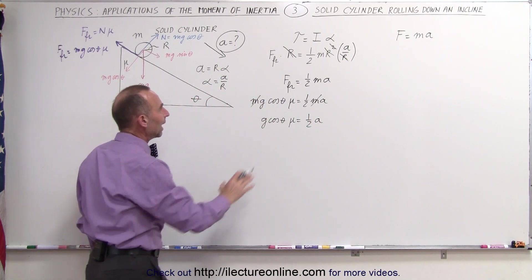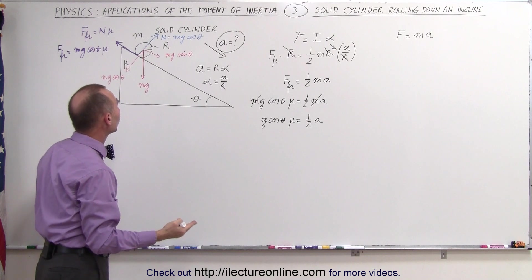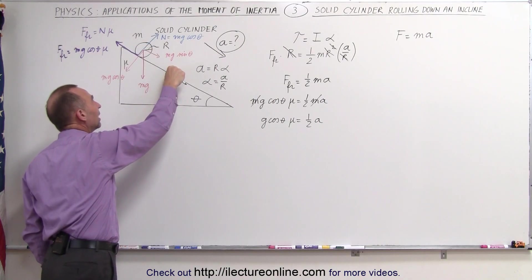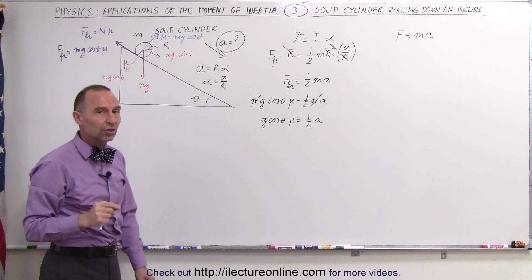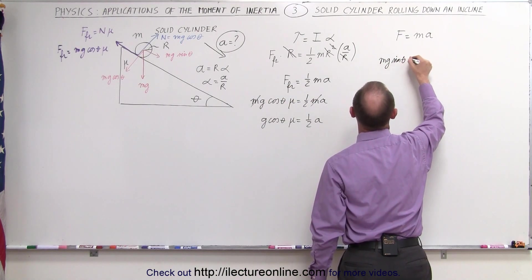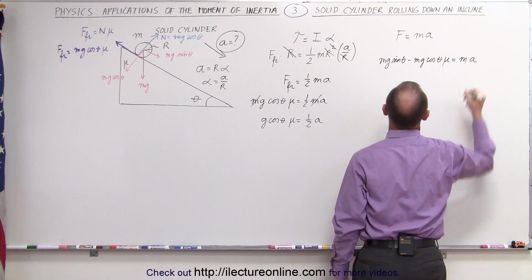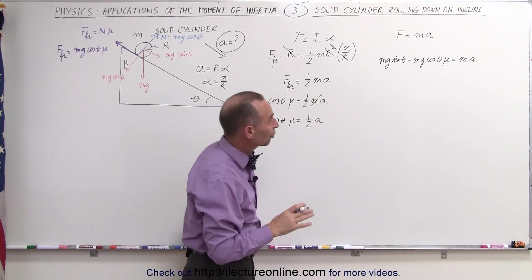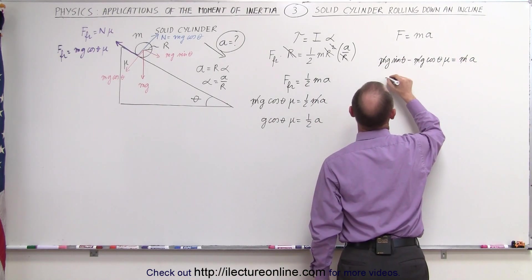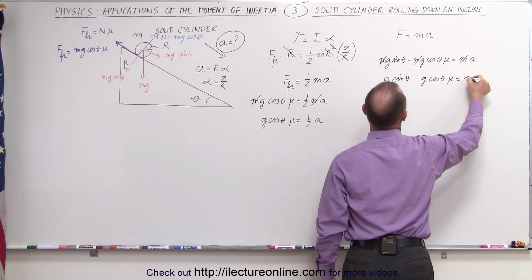We can also look at F equals ma along the incline. All the forces aiding the acceleration minus all the forces opposing the acceleration equal the mass times acceleration. mg sine theta is aiding the acceleration; the friction force is opposing it. So we write mg sine of theta minus mg cosine of theta times mu equals the mass times acceleration. Every term has an m in it, so we can eliminate m from every term, giving us g sine of theta minus g cosine of theta times mu equals the acceleration.